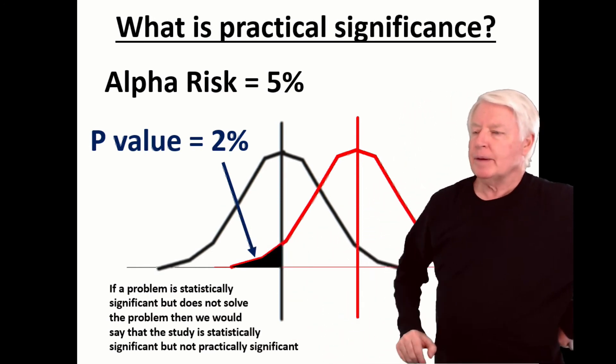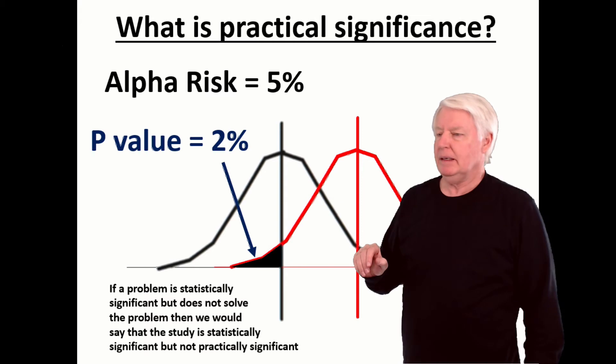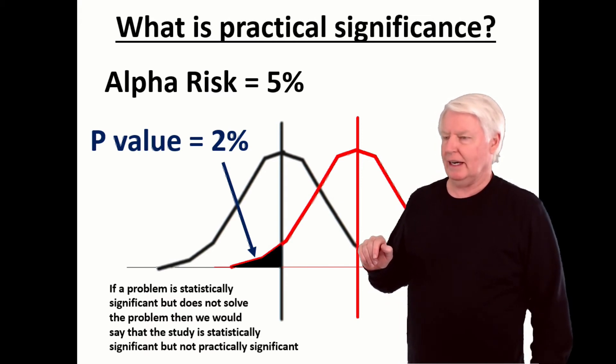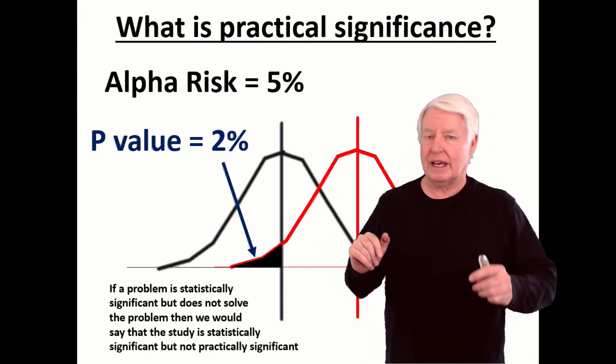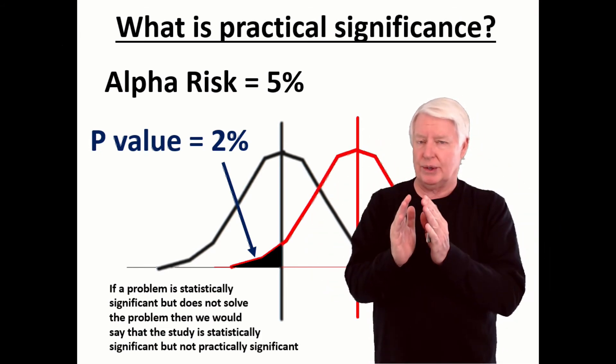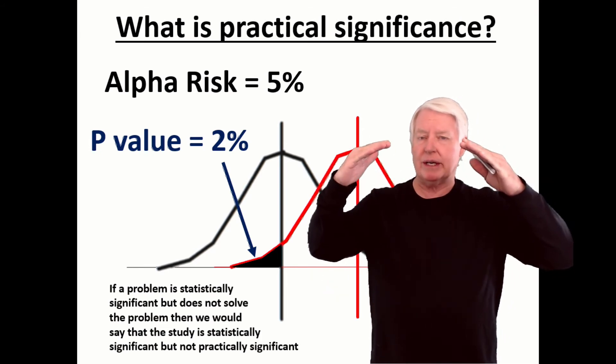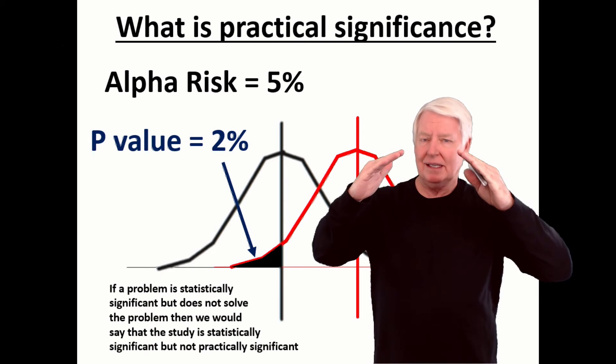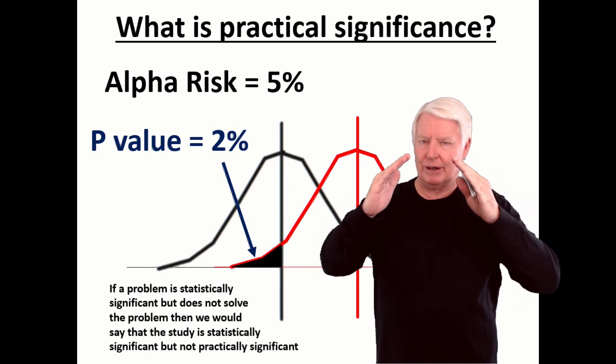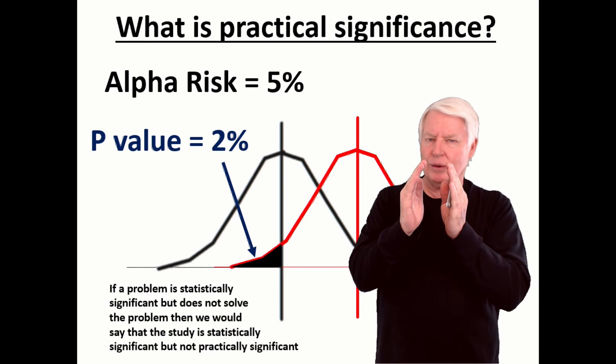And how do we do that? Well, per the central limit theorem, we can choose a sample size. Remember, if you work with averages instead of single events, the distribution shrinks in. So you increase the sample size to work with the averages until you get just the right width so that when it shows statistical significance, it's also practically significant.